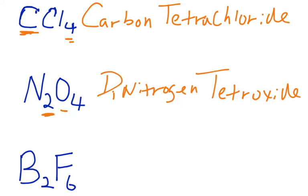For the last one, we see we have B. B is boron. How many borons do I have? I have two of them, right? So I've got to put 'di' in front of here, so it's diboron.